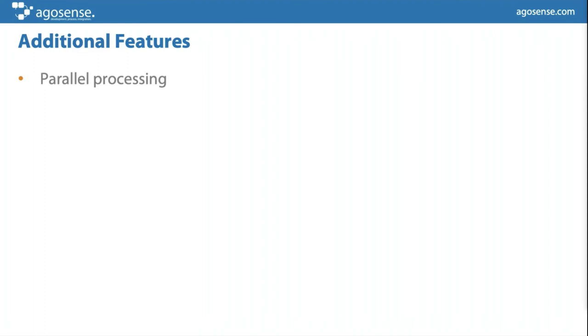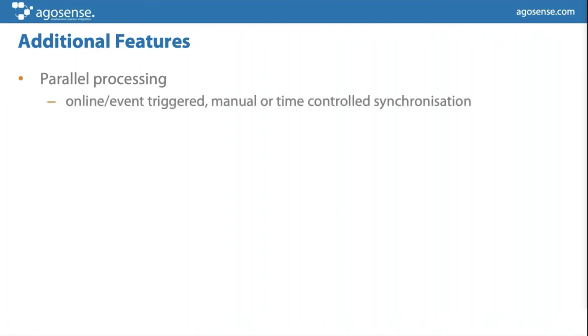The processes you have seen are only one process, but you can have multiple processes running in parallel, so the system scales from that perspective. At the same time, we are not only able to start processes based on a schedule — they can also be started on an event or manually. For example, in Jira there are server-side event triggers: if somebody sets a project state or item state to another value, this could be an indicator for Symphony to start synchronization.